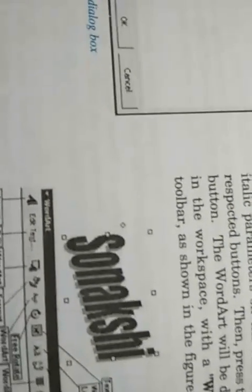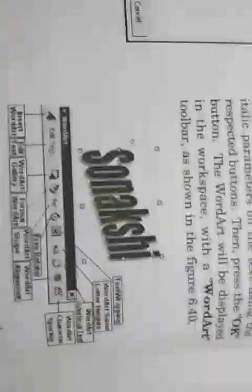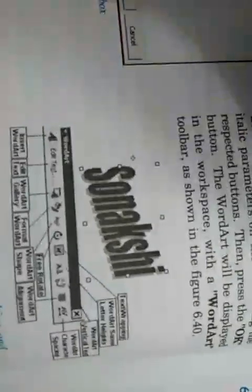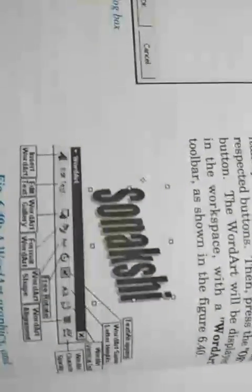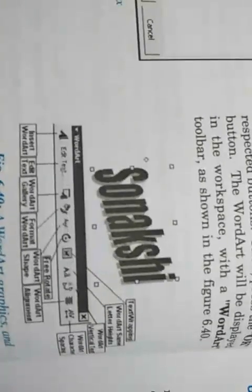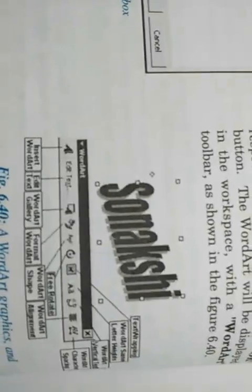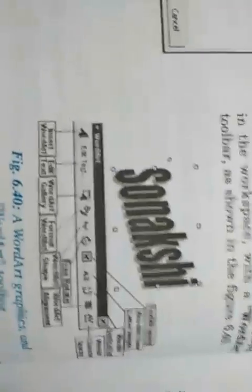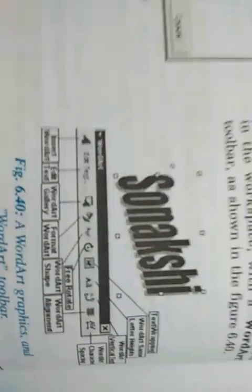Click OK and the WordArt will appear in your document. Similar to other objects, small rectangles or squares will appear outside the WordArt when selected. WordArt works like an object — when the mouse pointer shows four arrows, you can move it; when it shows a double arrow, you can increase or decrease the size.